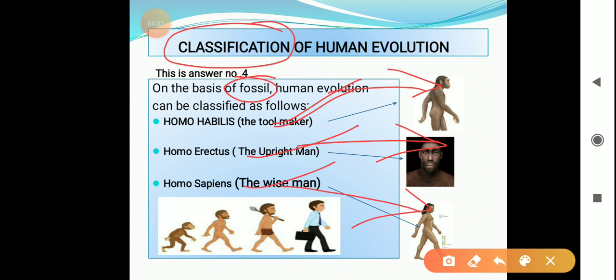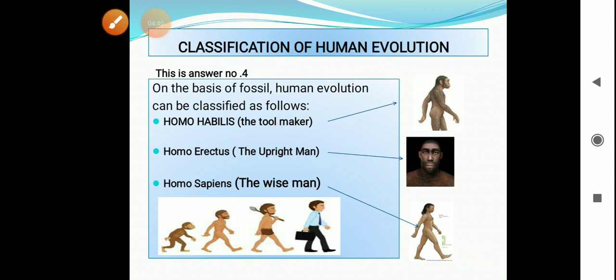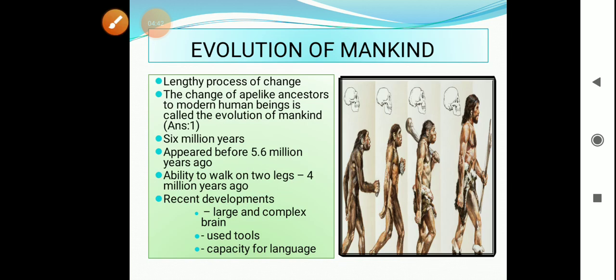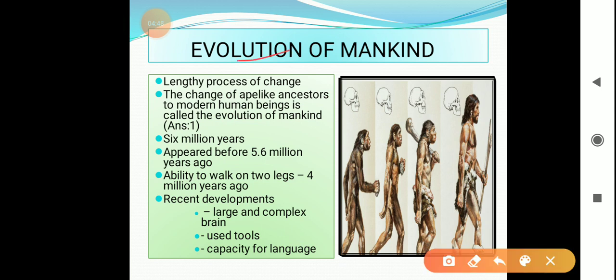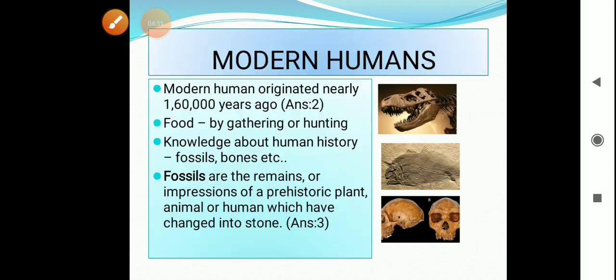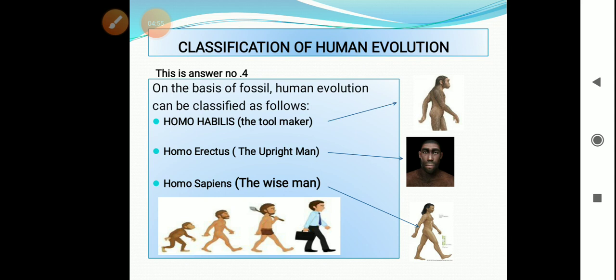Here we are concluding the first part of the video and we will have a quick review. In the first slide, we learned about evolution of mankind. In the second slide, we learned about modern human and fossils. And in the last, third one, we learned the classification of human evolution.